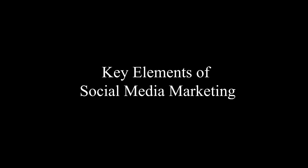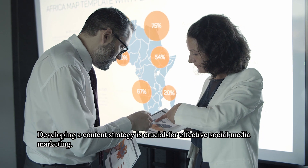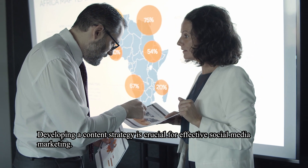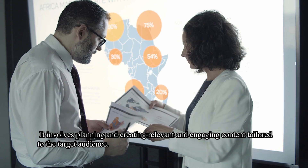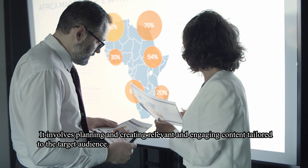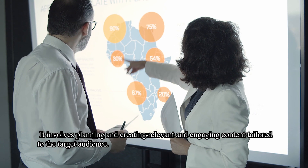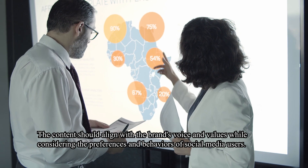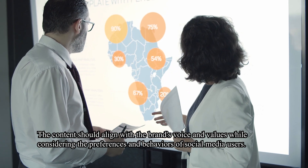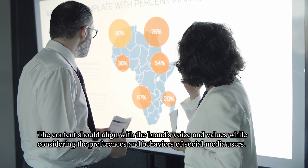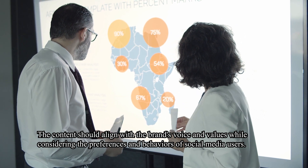Key elements of social media marketing. Content strategy: developing a content strategy is crucial for effective social media marketing. It involves planning and creating relevant and engaging content tailored to the target audience. The content should align with the brand's voice and values while considering the preferences and behaviors of social media users.